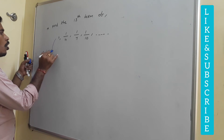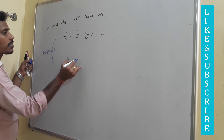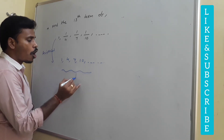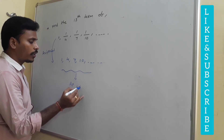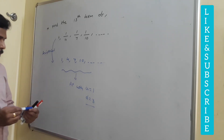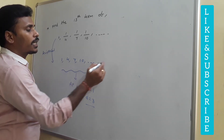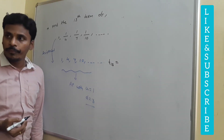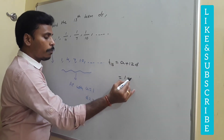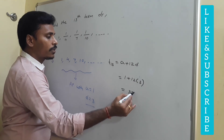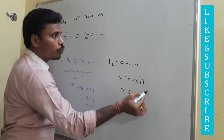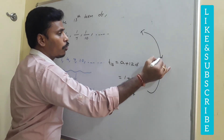If you reciprocal all these terms, you get 1, 4, 7, 10, and so on. Clearly, this is an arithmetic progression with a = 1 and common difference d = 3. You now have a chance to find the thirteenth term in this arithmetic progression. The thirteenth term is A + 12D = 1 + 12×3 = 1 + 36 = 37. Then you just reciprocal it to get the nth term of the harmonic progression.